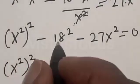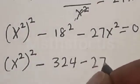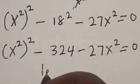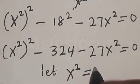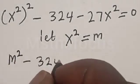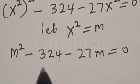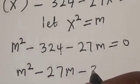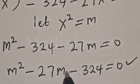This gives us x⁴ minus 18 squared, which is 324, minus 27 x squared is equal to 0. Let s squared equal m, so m squared minus 324 minus 27m is equal to 0. Rearranging: m squared minus 27m minus 324 is equal to 0. This is a quadratic equation, which can be solved using the factorization method or the quadratic formula.